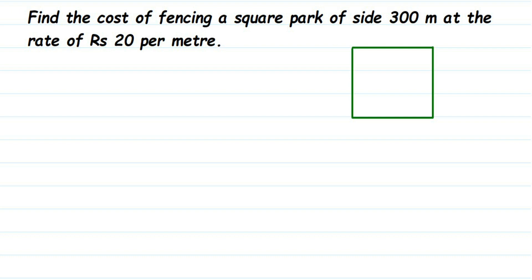Hey everyone, it's a question on square. The question is: find the cost of fencing a square park of side 300 meters at the rate of rupees 20 per meter. So here, what is given — the side of the square park is 300 meters, and they are asking us to find out the cost for fencing the square park, charging at 20 rupees per meter.